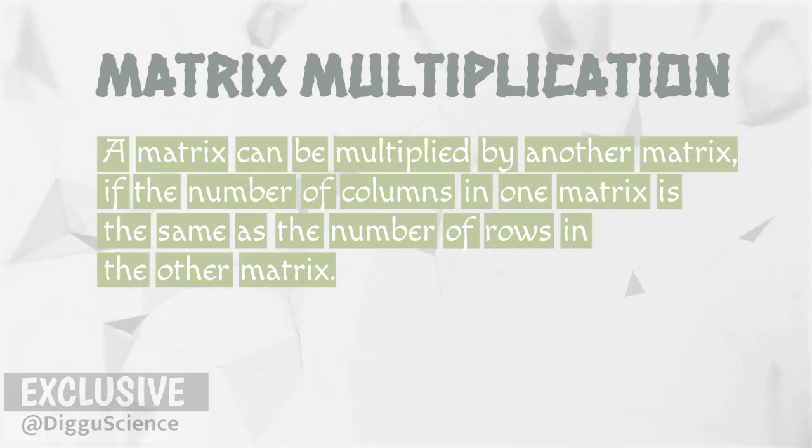Because the value of an element in a matrix is the sum of the multiplication of each row element of one matrix by each column element of the other matrix. If the number of columns is not the same as the number of rows, there will be elements that cannot be multiplied.